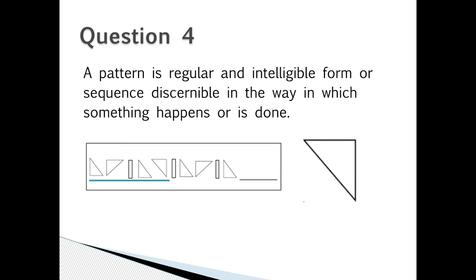Question 4: A pattern is a regular and intelligible form or sequence, sustainable in the way in which something happens or is done. In this case we have a right angle triangle with a 90 degree angle on the right.